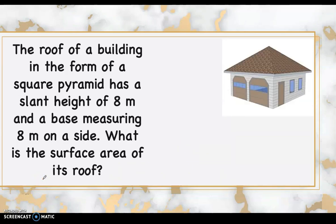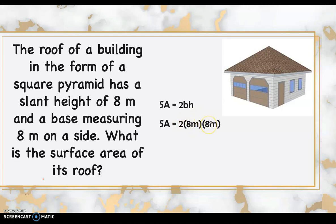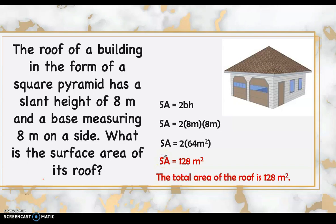The roof of a building is in the form of a square pyramid with a slant height of 8 meters and a base measuring 8 meters on each side. What is the surface area of the roof? Note that the roof does not include the base of the pyramid, so we only find the total area of the triangular faces using 2bh: 2(8)(8) = 128 square meters. The surface area of the roof is 128 square meters.